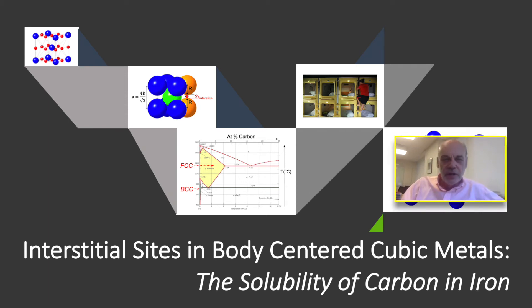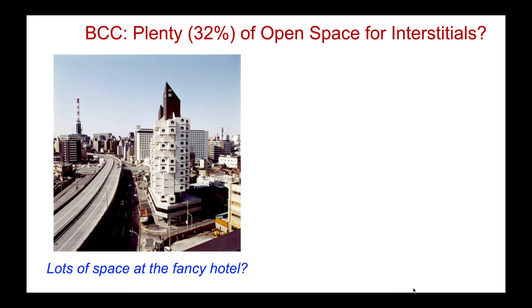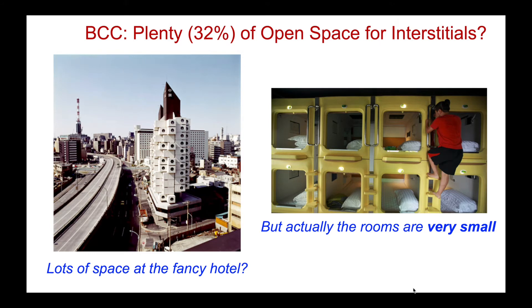Hello, I'm talking to you today from one of the interstitial sites in the body centered cubic structure. Now, it might look as though there's a lot of space in here, but there really isn't. From what we've done previously on packing efficiencies of metal structures, we know the body centered cubic structure has plenty of open space potentially for interstitials. 32% of the structure is not taken up by atoms. But we're going to see the actual size of these interstitials is very small, and so while the hotel may look large and spacious, in fact the rooms in our BCC hotel are extremely small.